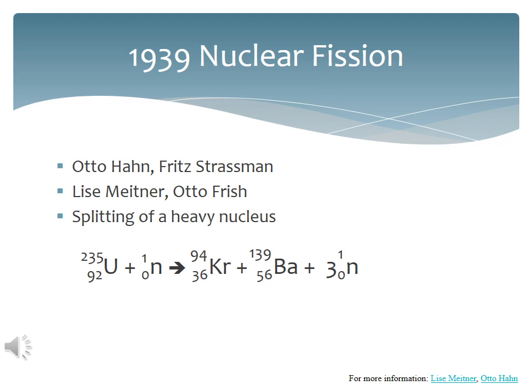In 1939, Otto Hahn's experiments revealed that when a uranium-235 nucleus collides with a neutron, it splits, generating more neutrons. Note in the equation that the total of the mass numbers on the left-hand side equal the total of the mass numbers on the right-hand side. Same thing with the atomic numbers. Total of the atomic numbers on the left equal total of the atomic numbers on the right.